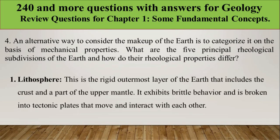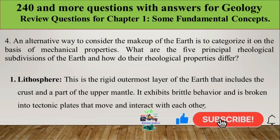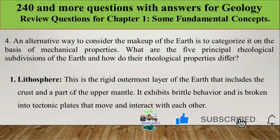The five principal rheological subdivisions of the Earth are: lithosphere, asthenosphere, lower mantle, outer core, and inner core. The first is the lithosphere — the rigid outermost layer including the crust and part of the upper mantle. It shows brittle behavior and is broken into tectonic plates that move and interact with each other.